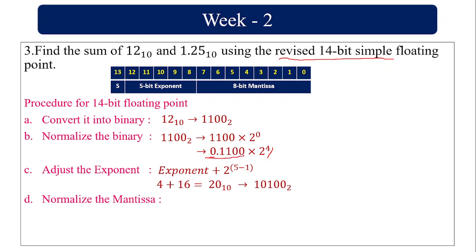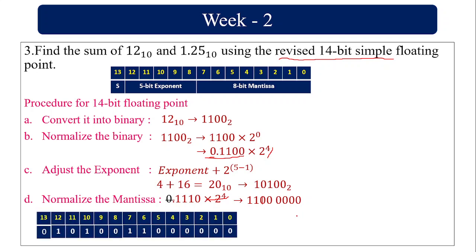Now normalize the mantissa part. Remove the leading MSB (always 1 for normalized value). The remaining value is 0.1110. I pad with zeros to make it an 8-bit mantissa: 1, 1, 1, 0, 0, 0, 0, 0. This gives the 8-bit mantissa for 12.